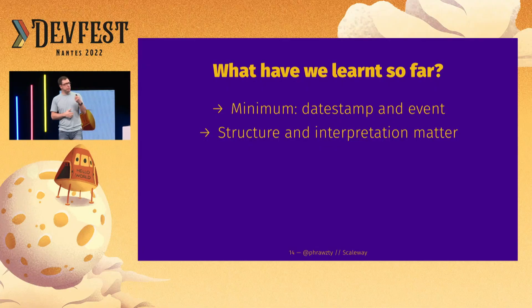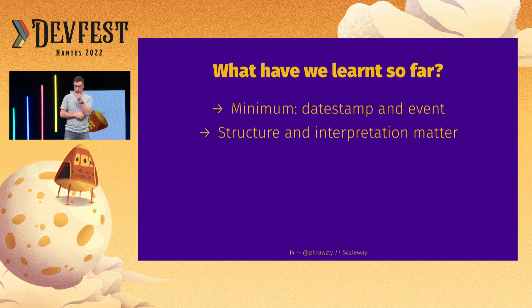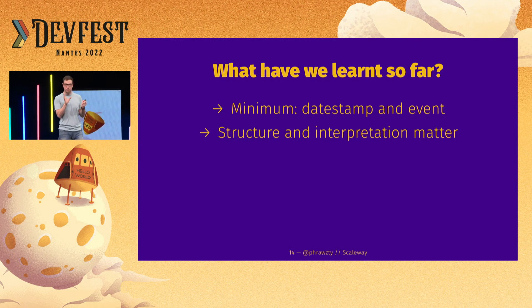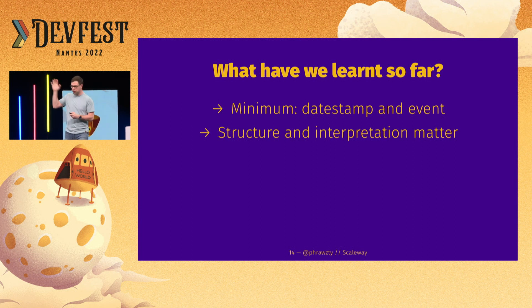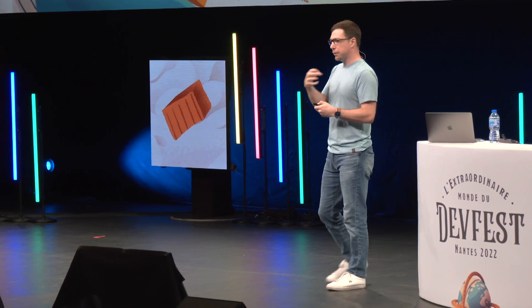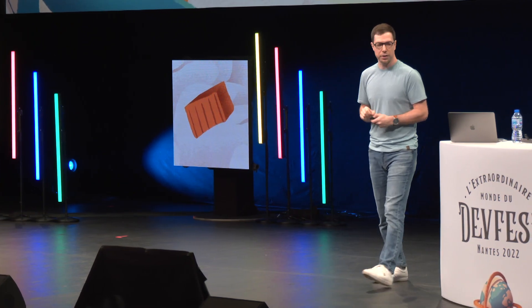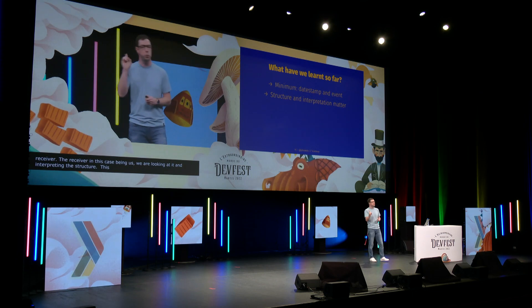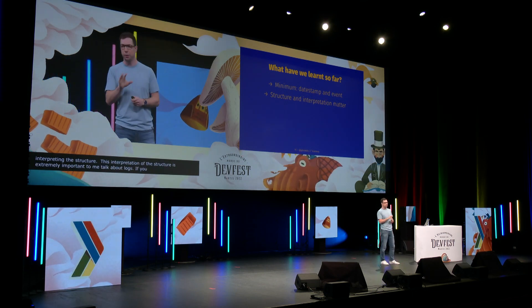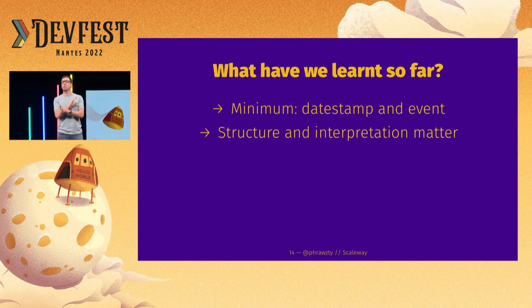So what have we learned so far? A log message describes an event at a point in time — that's a log entry. We've also learned there are ways of structuring data, and that the ways of structuring that data are interpreted by the receiver — in this case, us. This interpretation of structure is extremely important when we talk about logs. If you take nothing else away from this talk, remember these two points. They will help you read and write better log messages for the rest of your career. I know this because I've spent a lot of time looking at a lot of logs, and they're all a hot mess because someone didn't understand these two things.